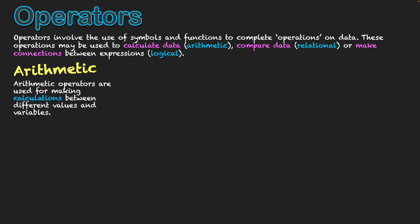So firstly, we have arithmetic. These are operators that are used for making calculations between different values and variables. These symbols include plus for addition, minus for subtraction, asterisk for multiplication, and slash for division. They're used to be placed between values, and they conduct the specific operation based on where they're placed between those values.